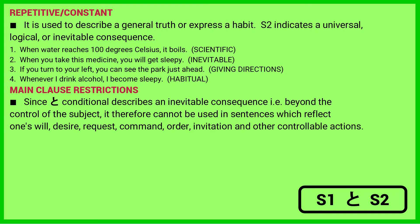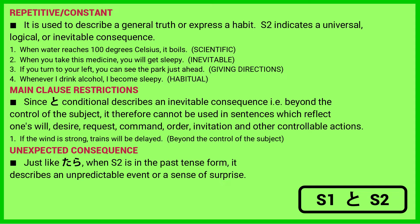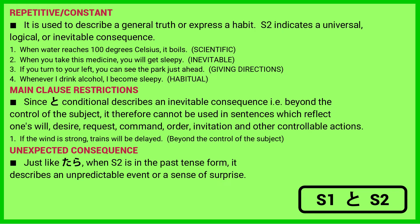Main clause restrictions for to: since the to conditional describes an inevitable consequence beyond the control of the subject, it cannot be used in sentences reflecting one's will, desire, request, command, order, invitation, and other controllable actions. Example: if the wind is strong, trains will be delayed. Unexpected consequence: just like tara, when the main clause is in past tense form, it describes an unpredictable event or a sense of surprise — when I went to the department store, I found it closed; when I came back home, my friend was waiting for me.